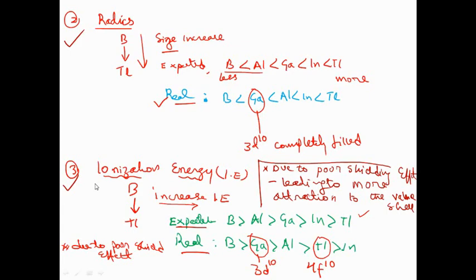Ionization enthalpy also changes on going down the group. When electrons move from top to bottom, due to increase in electronic configuration and size, the shielding effect decreases. Due to poor shielding effect, there is more attraction between the valence shell and the nucleus. The expected order was boron > aluminum > gallium > indium > thallium, but in actual sense we get boron > gallium > aluminum > thallium > indium, because gallium has a completely filled 3d10 and indium/thallium have filled 4f14 configurations.